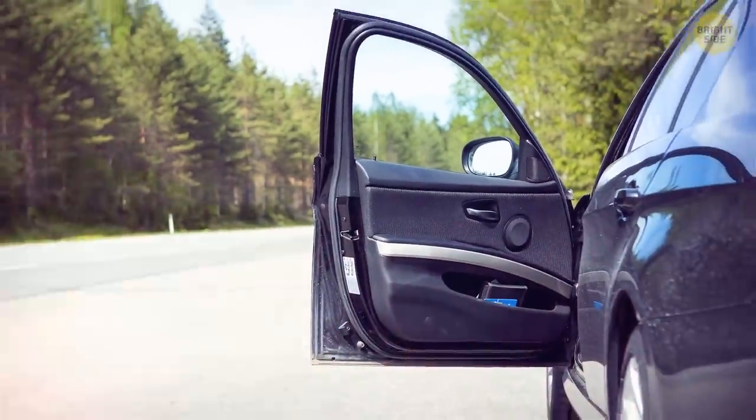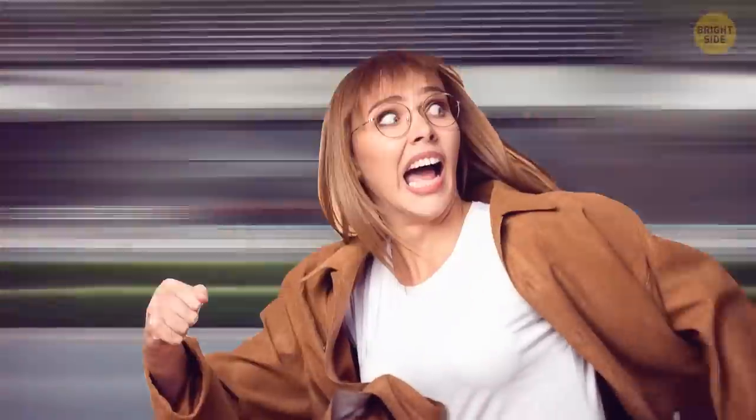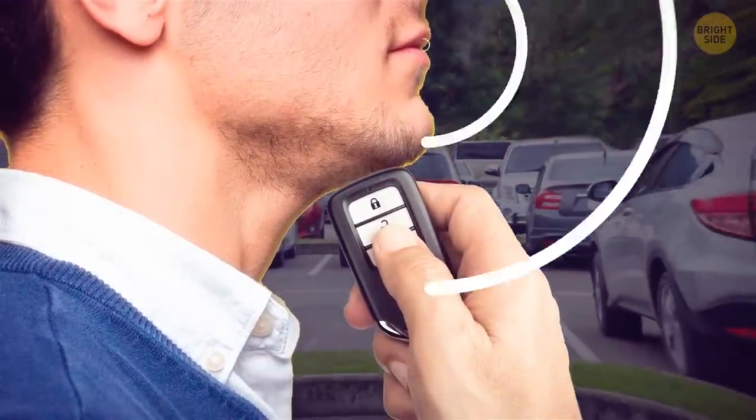Do you think you forgot to lock your car, and now you're pretty far away from it? No worries! There's no need to run back awkwardly. Put your fob under your chin. This will increase its range by several car lengths.